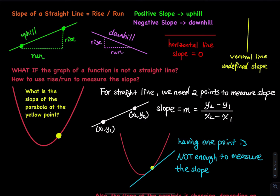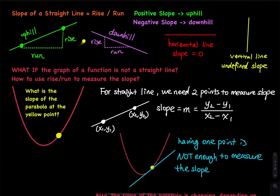How many units did you run from this point to this point? And then from the corner to this point, you write down the rise. Then the slope of this straight line is a fraction — rise over run — which is a number divided by a number. You have to make sure that the fraction is positive because the line is going uphill. The slope is positive.